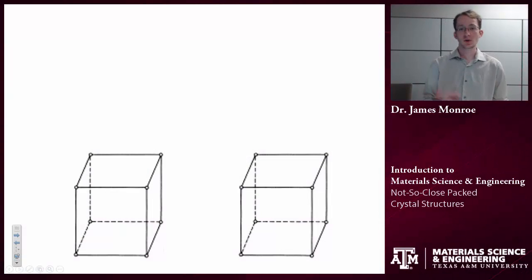So, in the previous video, we discussed close packed structures, but I also stated that crystal structures can take many different forms. So, what happens if we have a crystal structure that's not so close packed?